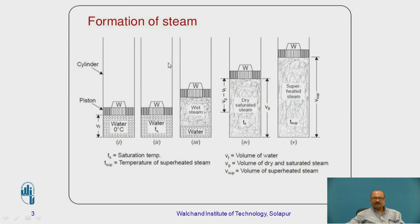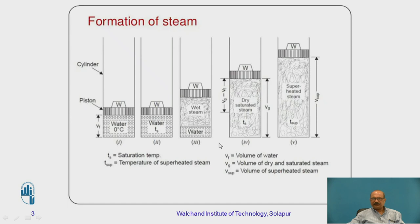Here I have shown the piston and cylinder arrangement, which is having a double weight kept on it. The volume of this ice section is at zero degrees centigrade. The heating process will start and the conversion of this ice into superheated steam will be continued. The term I am going to use is the addition of heat energy.